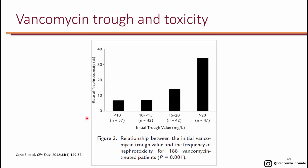On the horizontal axis, we're looking at different levels of trough: less than 10, trough of 10 to 15, trough of 15 to 20, and trough greater than 20. On the vertical axis, we're looking at the risk of nephrotoxicity. Basically there's not much difference if the trough is less than 10 or 10 to 15. However, when the trough starts to go above 15, you start to see increased risk of nephrotoxicity, which is highest when the level is greater than 20.